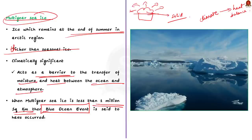During the Blue Ocean event, the Arctic will appear blue instead of its characteristic white color due to the lack of ice. This is all about the Blue Ocean event and multi-year ice.